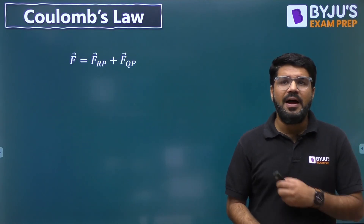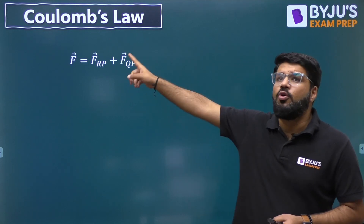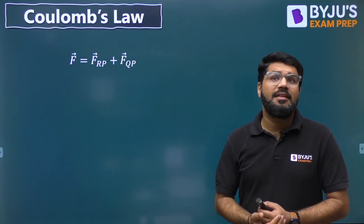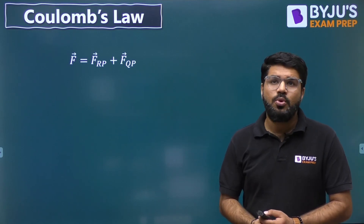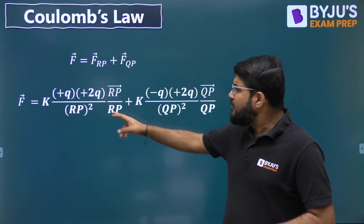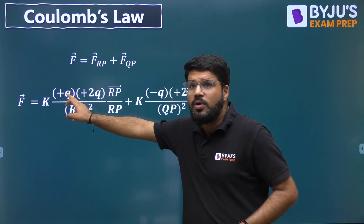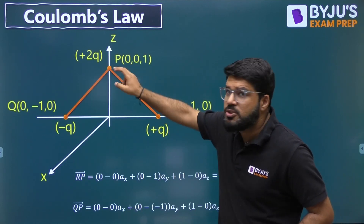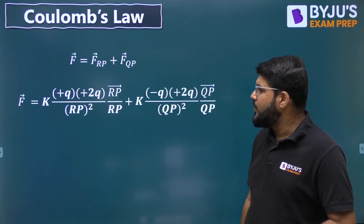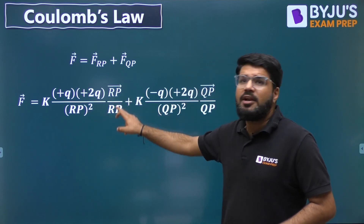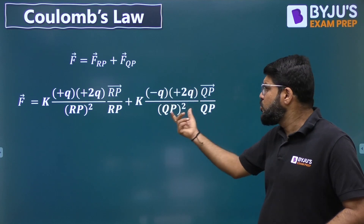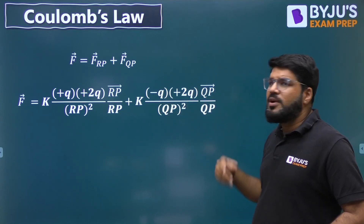Now let us apply Coulomb's formula to get the net force. As per superposition, the net force is the force from R to P plus the force from Q to P. Force is given by K Q1 Q2 divided by R squared times R̂. So we have K times (+Q)(+2Q) divided by RP squared times the unit vector along RP, and K times (−Q)(+2Q) divided by QP squared times the unit vector along QP. The unit vector is the vector divided by its magnitude.